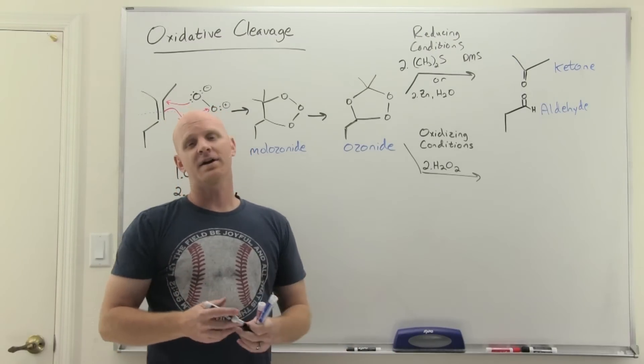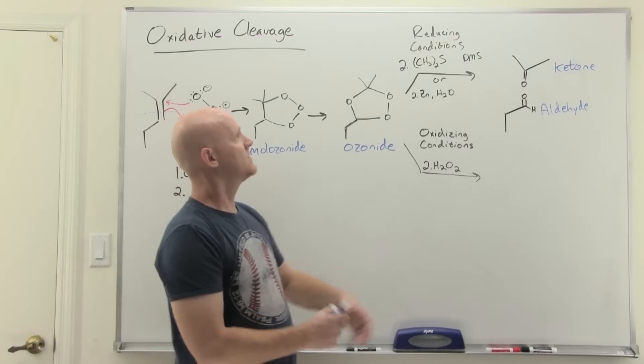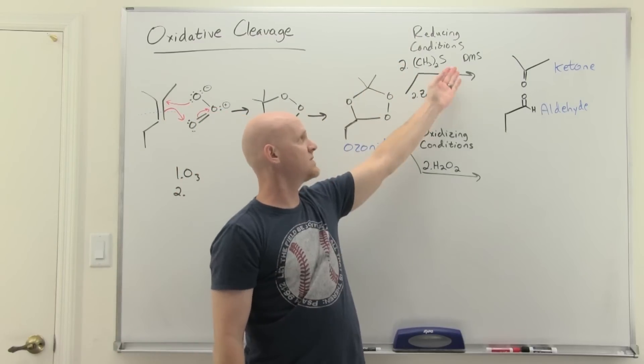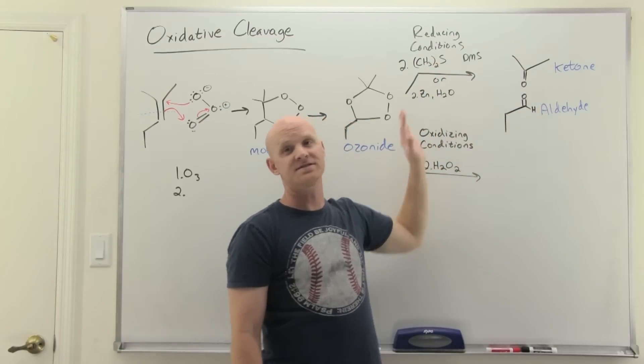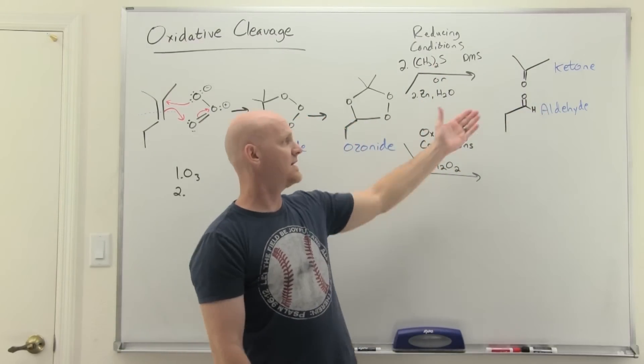But aldehydes can be oxidized to carboxylic acids. When you do this under reducing conditions, either with dimethyl sulfide or zinc, an aldehyde stays an aldehyde. Your reducing agent keeps it from getting oxidized, so you get your aldehyde.